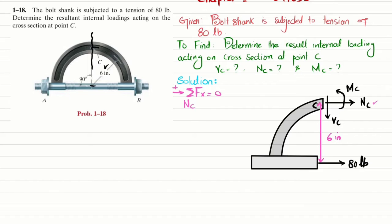So Nc plus the second force, 80 pounds in the positive direction, their sum must equal zero. From here you will get Nc equals minus 80 pounds.